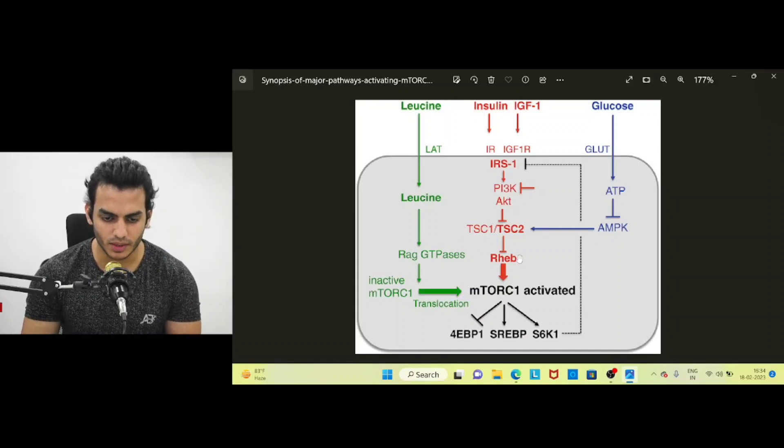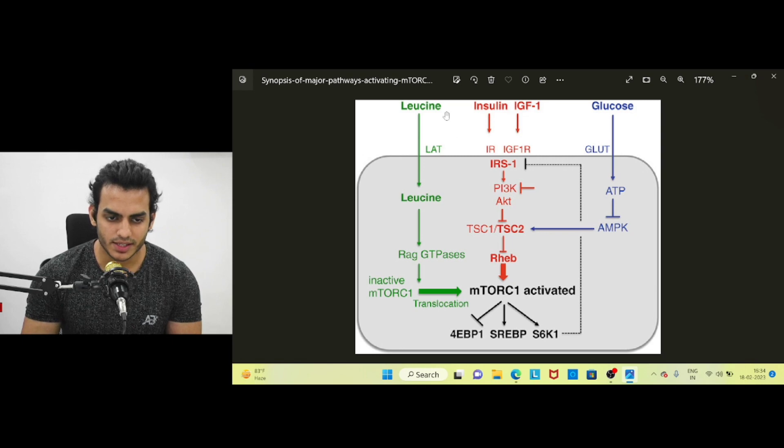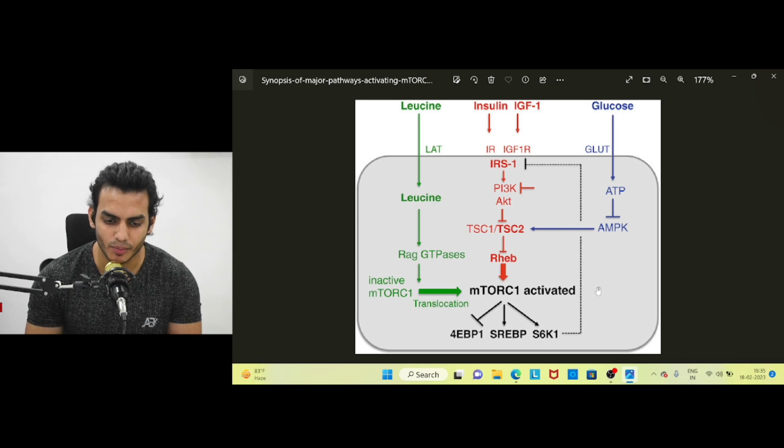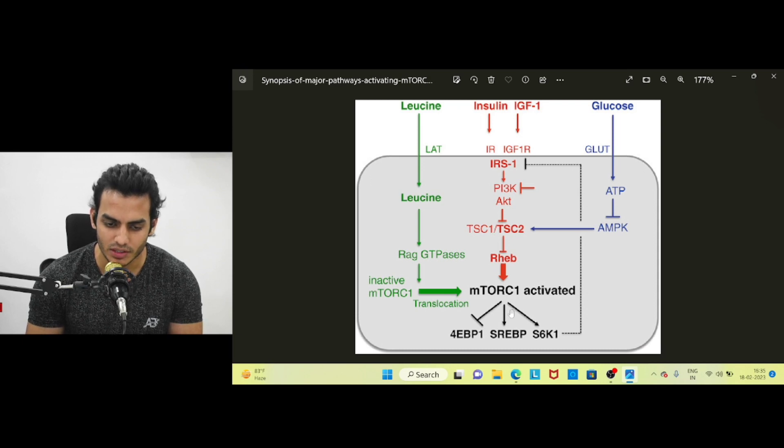In this video I'll be talking about mTORC1 complex and leucine. Leucine is an amino acid responsible for muscle protein synthesis and is the main component for MPN. mTORC1 complex is a nutrient sensing pathway in our body which regulates growth, tumor cells, cellular division, and muscle protein synthesis.